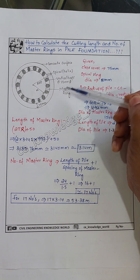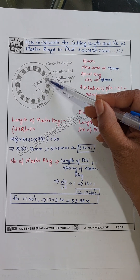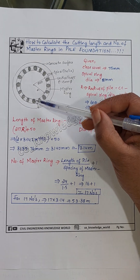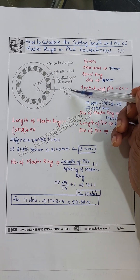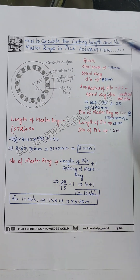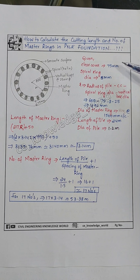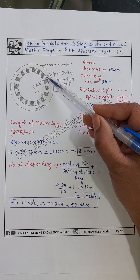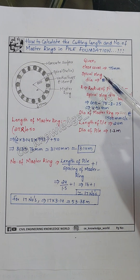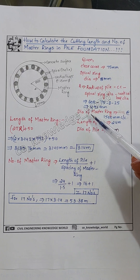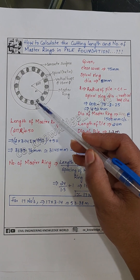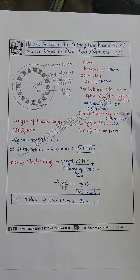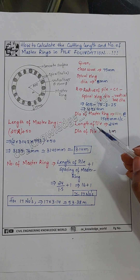The vertical bars provided are 25 mm diameter. The inner circular portion contains the master ring. The given data is: clear cover is 75 mm, spiral ring provided is 8 mm diameter, and master ring is provided at 1500 mm center to center.